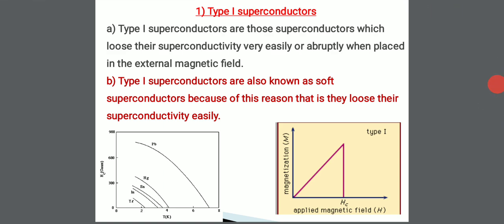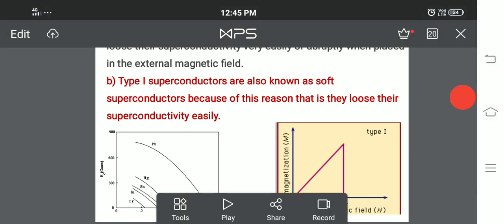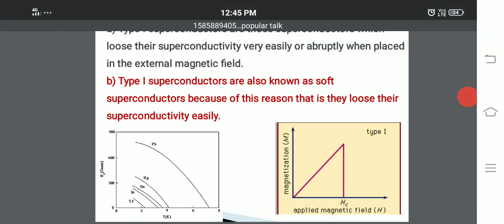Type 1 superconductors are called soft superconductors because they lose their superconductivity very easily. Very small fields are required — the critical fields are very small in type 1 superconductors. Even a small magnetic field is enough to destroy the superconducting phenomena in these materials.